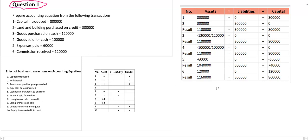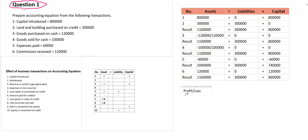What is the effect of each transaction on the accounting equation? Through the accounting equation, we can also find out the profitability or loss of the business. Go through this formula: profit or loss is equal to ending assets minus ending liabilities, minus initial capital — also called beginning capital.